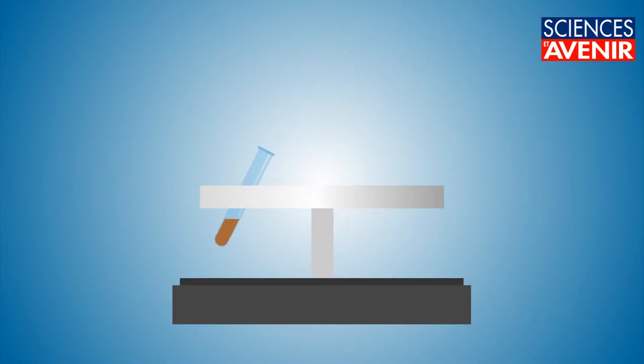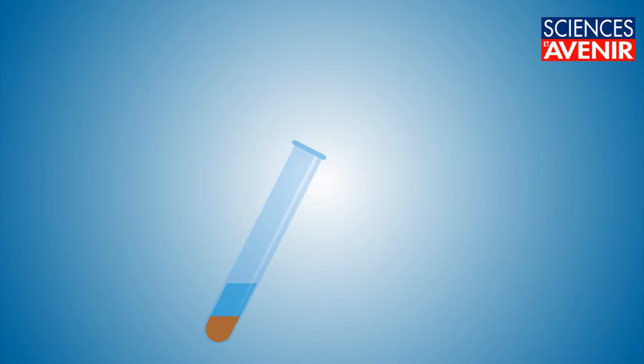The tube is then placed in a centrifuge to separate the various elements. The heaviest migrate to the bottom of the tube, while the much lighter DNA will remain on the surface. This supernatant containing DNA strands is collected.